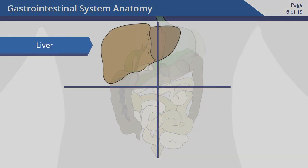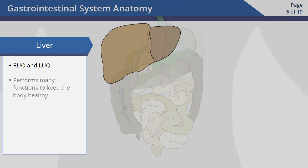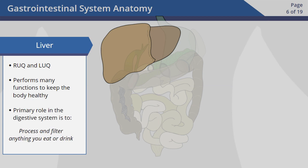The liver is a large organ. It is found in both the right upper quadrant and the left upper quadrant. The liver performs many functions to keep the body healthy, but its primary role in the digestive system is to process and filter anything you eat or drink.